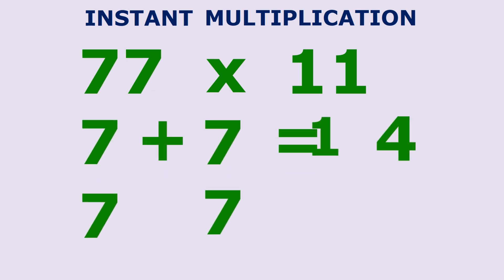Ok, now it's your turn. As fast as you can, what is 77 x 11? If you got the answer 847, then give yourself a pat on the back. You are on your way to become a mathematician.